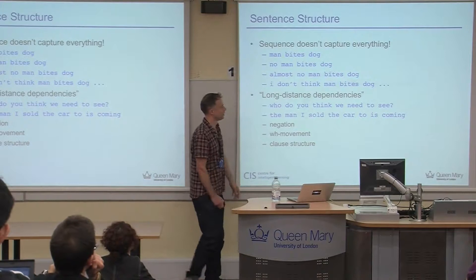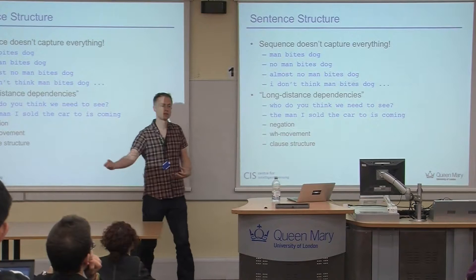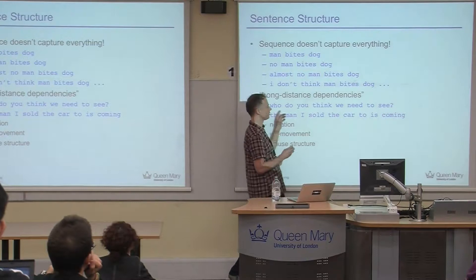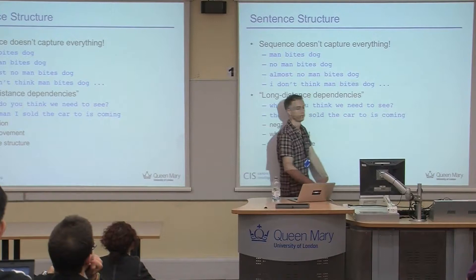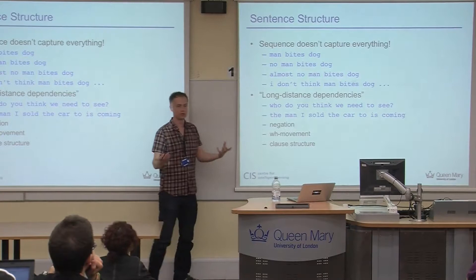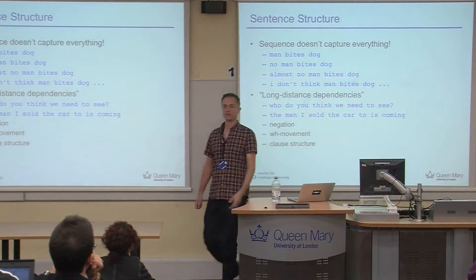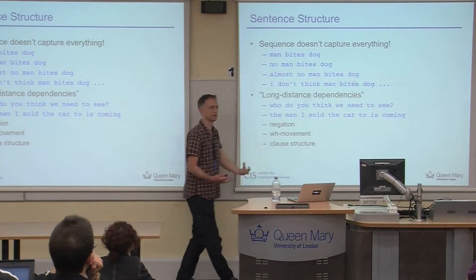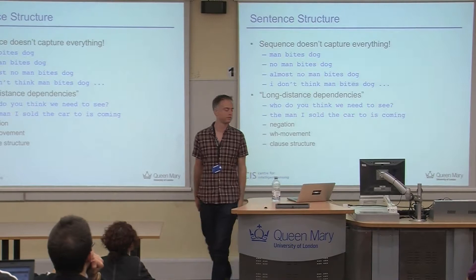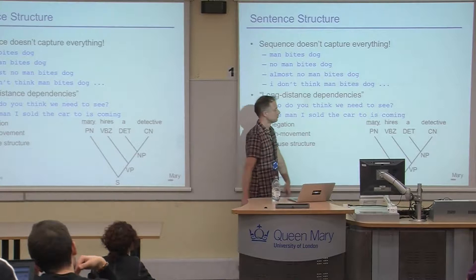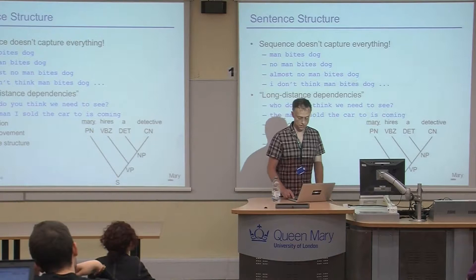Words can have strong dependencies across completely different parts of a sentence. 'Who do you think we need to see?' — the 'who' is playing a role tied to the 'see' far away. 'The man I sold the car to is coming' — 'the man' has a strong grammatical dependency on a position later in the sentence. This is nothing to do with linear sequence anymore — it's to do with hierarchical structure.